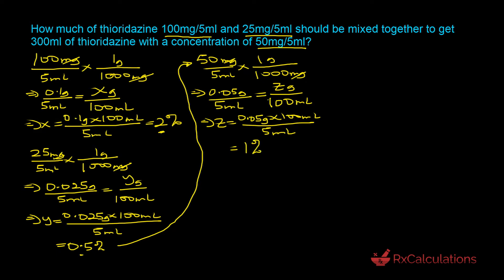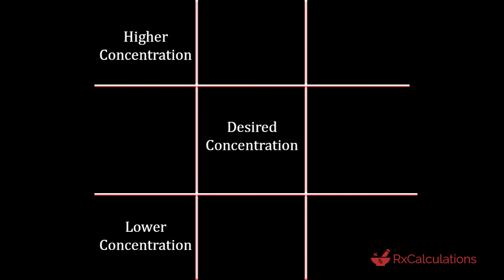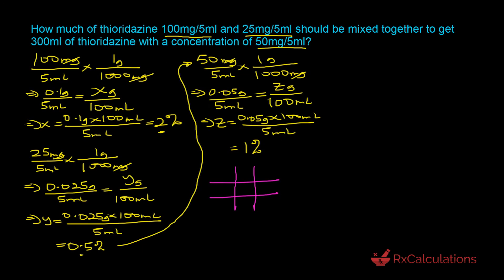Now that we know all the percentage strengths, we can set up the alligation grid with two vertical and two horizontal lines. The higher concentration goes to the top left, the lower concentration to the bottom left, and the desired concentration in the middle. So 2 percent goes top left, 0.5 percent bottom left, and 1 percent in the middle.